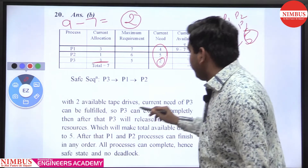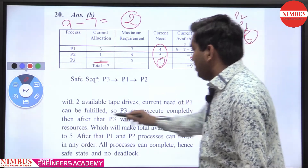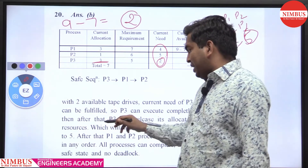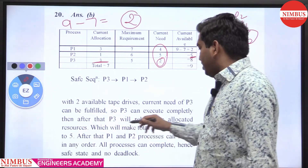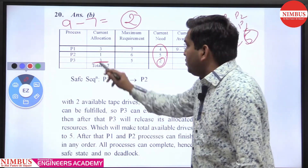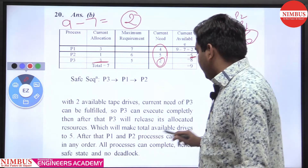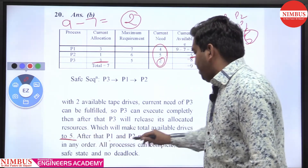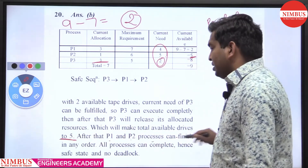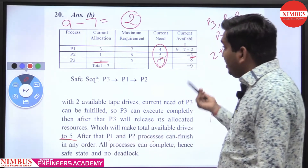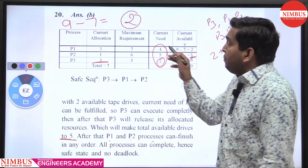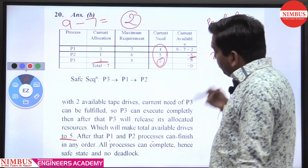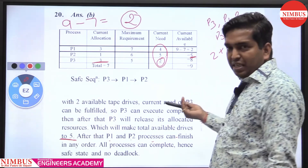The 2 available tape drives satisfy P3's current need, so P3 can execute completely. After P3 finishes, it releases its allocated resources, making total available equal to 5. With 5 available, both P1 and P2 can be processed in any order — P1's requirement is 4 and P2's requirement is 5 — both are satisfied.